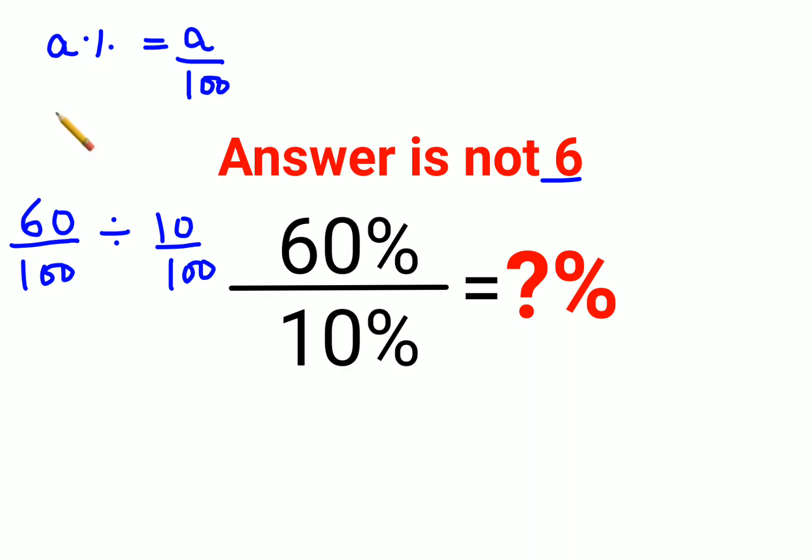Now whenever you have a division sign between two fractions, you have to follow the rule of KCF where K stands for keeping the first fraction as it is.